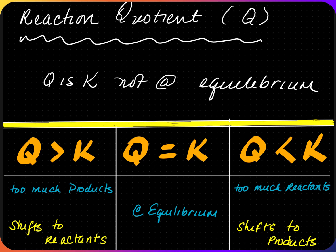When Q is greater than K, the equilibrium constant, there is too much product, so the reaction will shift towards the reactants. When Q is equal to K, it is at equilibrium and no shift will be required. When Q is less than K, there are too many reactants, and it shifts to the products.